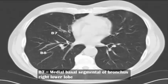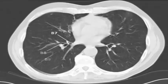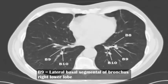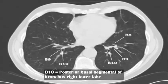V7 medial basal segment of bronchus right lower lobe, V8 anterior basal segment of bronchus right lower lobe, V9 lateral basal segment of bronchus right lower lobe, V10 posterior basal segment of bronchus right lower lobe.